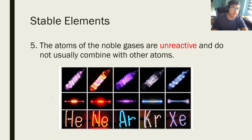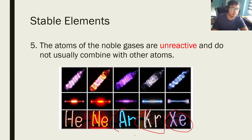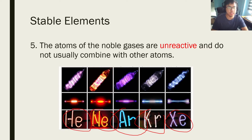The atoms of the noble gases are unreactive. That means helium, neon, argon, krypton, and xenon — all these elements are unreactive. They do not react with other elements at all, and they don't form any compounds with other elements.